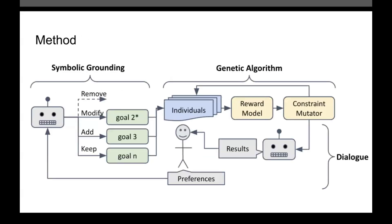The overall architecture is on the screen here. At the start, we take the user's preferences, which are at a high level and not symbolically grounded, and then symbolically ground them. For example, if someone says, 'I need you to remove all the underwater debris,' one of the goals may be 'remove underwater debris zero from waypoint A before the end of the plan.'